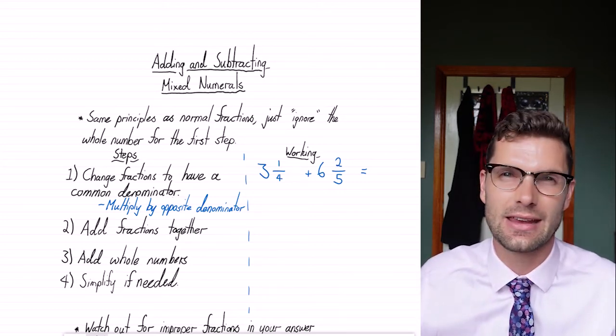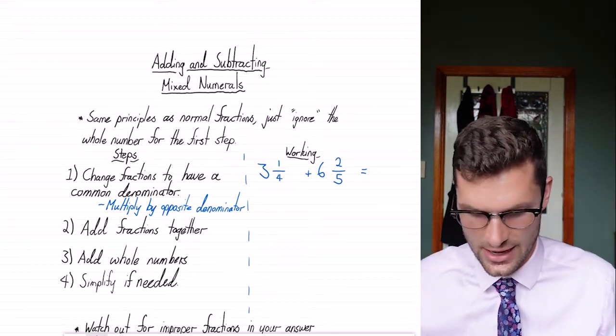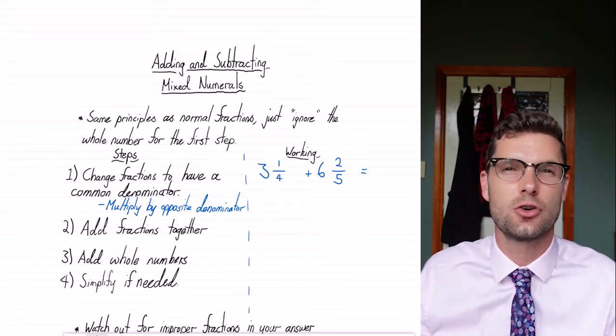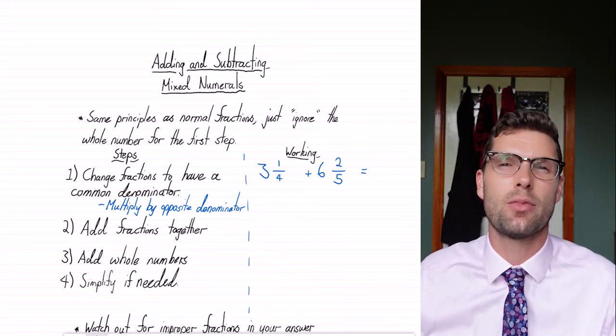So if we've got an example here like this, we've got three and a quarter plus six and two fifths equals what? So the first thing we've gotta do is make the denominators of the two fractions the same. And we can do this by just multiplying by the other denominator.